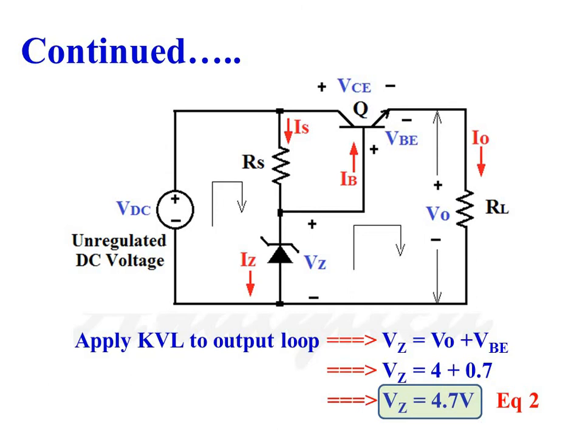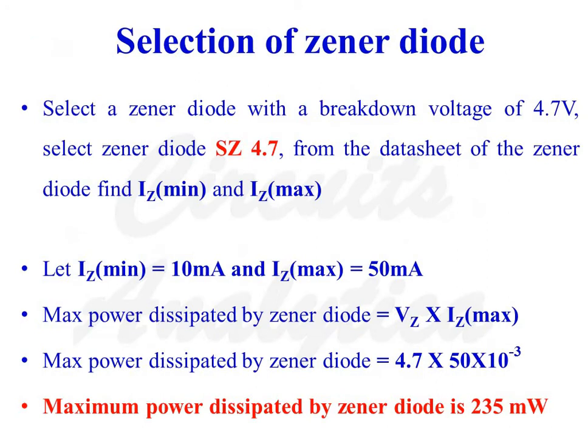Applying KVL to the output loop, we get VZ equal to V0 plus VBE. With V0 equal to 4V and VBE assumed as 0.7V, VZ equals 4.7V. For the selection of the Zener diode, we select a Zener diode with a breakdown voltage of 4.7V, that is, select Zener diode SCZ 4.7V. From the datasheet, IZ minimum is 10mA and IZ maximum is 40mA.